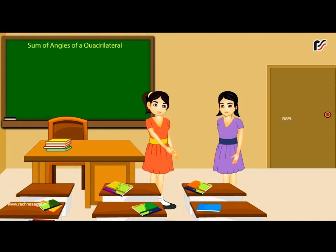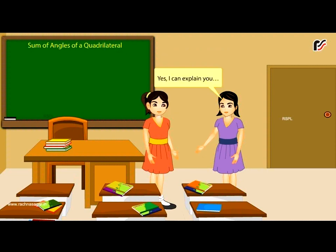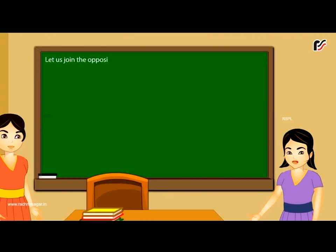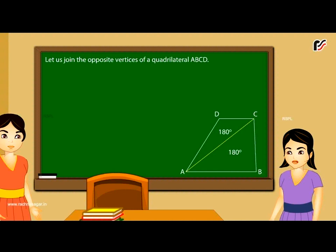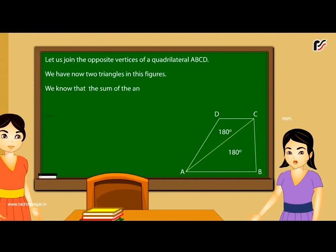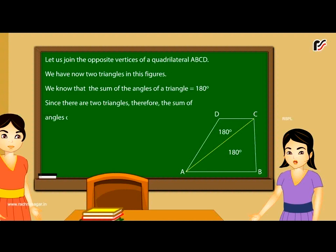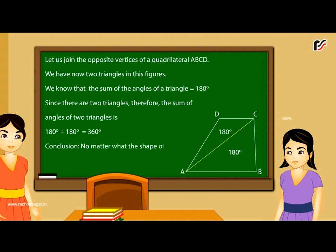Sum of angles of a quadrilateral: Do you know what is the sum of angles of a quadrilateral? Let us join the opposite vertices of quadrilateral ABCD. We now have two triangles in these figures. We know that the sum of the angles of a triangle is equal to 180 degrees. Since there are two triangles, the sum of angles of two triangles is 180° + 180° = 360°. No matter what the shape of the quadrilateral is, the sum of its four angles is 360 degrees.